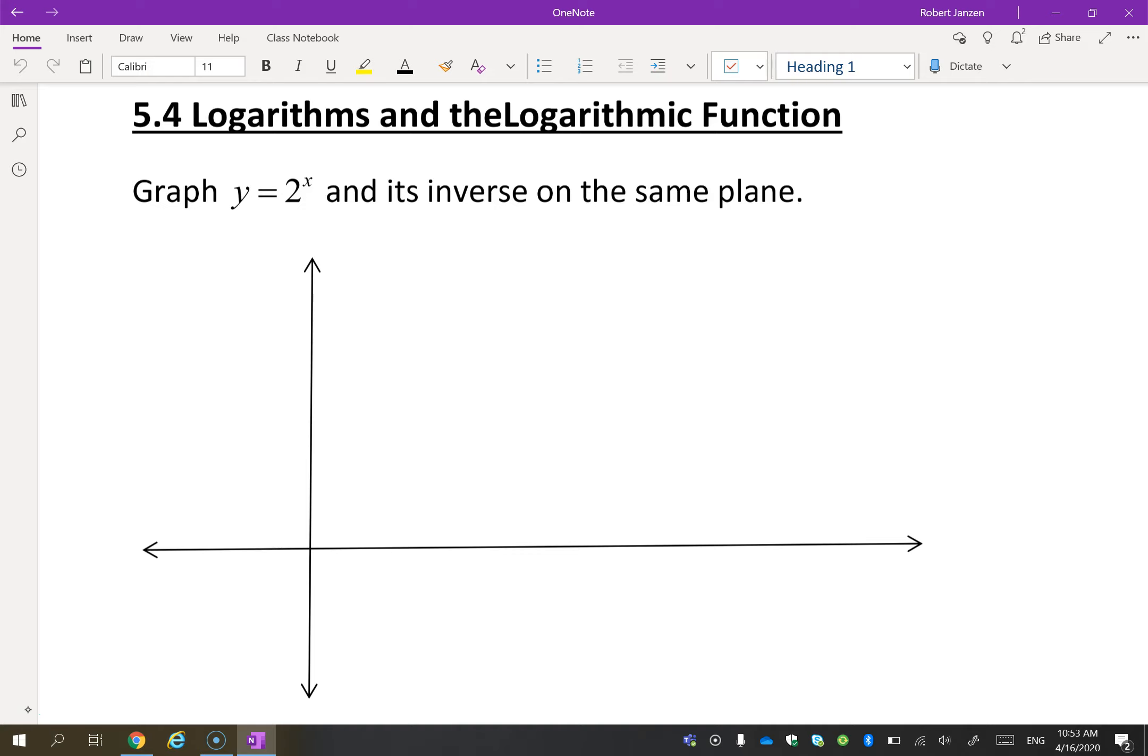It says here to graph y equals 2 to the x. This is an exponential function. This we already know how to do. Let's graph that. You know that the y-intercept is 1. Then you know there is another point if we make x be 1, y would be 2. And this will have a horizontal asymptote like this. And the graph would look something like that. This is y equals 2 to the x.